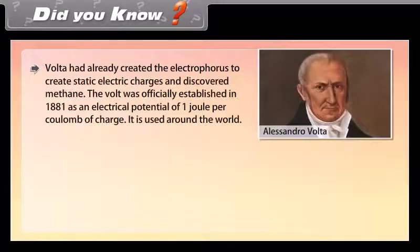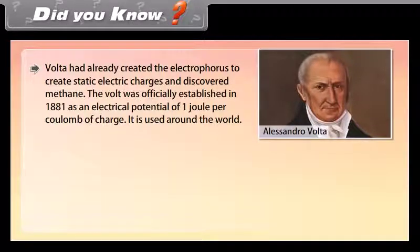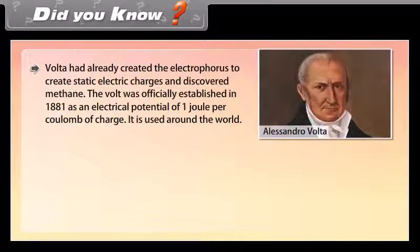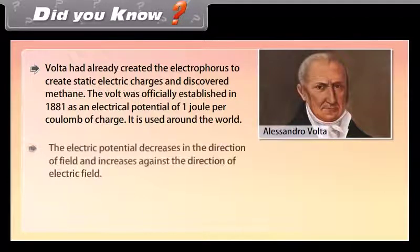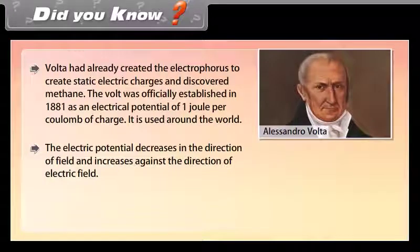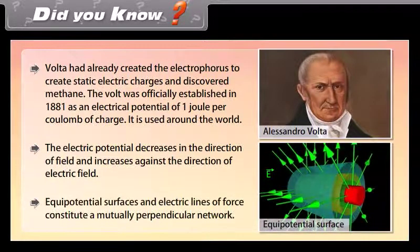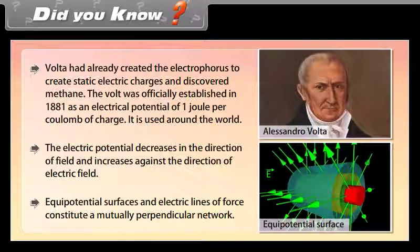Did you know? Volta had already created the electrophorus to generate static electric charges and discovered methane. The volt was officially established in 1881 as an electrical potential of 1 joule per coulomb of charge. Electric potential decreases in the direction of the field and increases against the direction of the electric field. Equipotential surfaces and electric lines of force constitute a mutually perpendicular network.